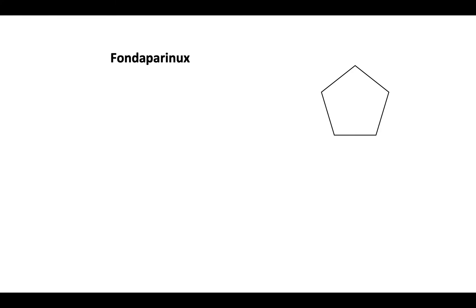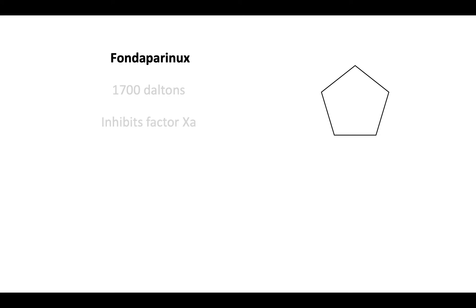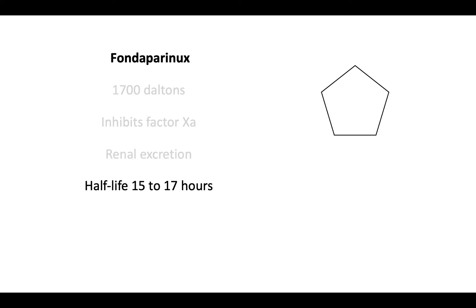Some properties of fondaparinux include its small molecular weight of approximately 1,700 daltons. Like the low molecular weight heparins, fondaparinux inhibits factor Xa but does not inhibit thrombin. Fondaparinux undergoes primarily renal excretion and has a half-life of 15 to 17 hours. Its long half-life permits once-daily dosing.